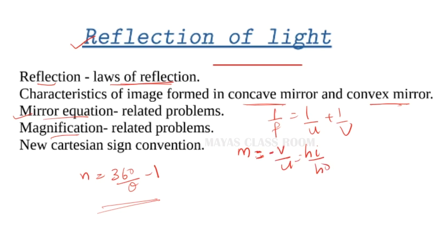In other cases, −v/u gives the magnification. We also cover the new Cartesian sign convention. If you want to apply the new Cartesian sign convention, we can change between negative and positive values for the object and image distances.